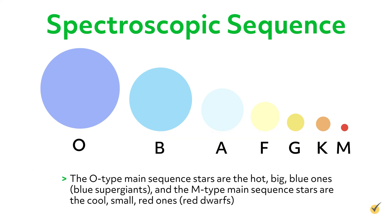The O-type main sequence stars are the hot, big blue ones, blue supergiants. And the M-type main sequence stars are the cool, small red ones, or red dwarfs.